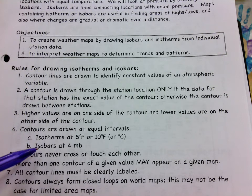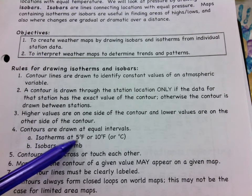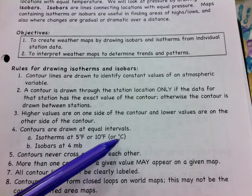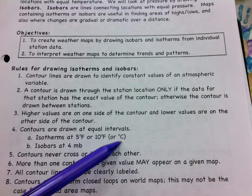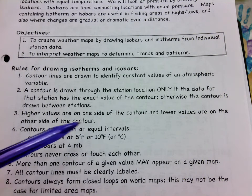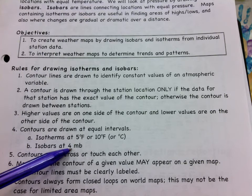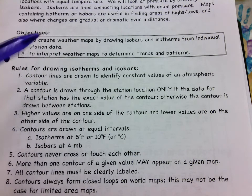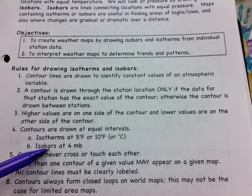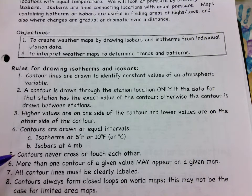Isotherms are usually drawn at intervals of 5 or 10 degrees Fahrenheit, or if you're using Celsius, usually anywhere from 2 to 5 degrees. Isobars are usually drawn at 4 millibars. And isobars — again, iso means same and bar means barometer or pressure.